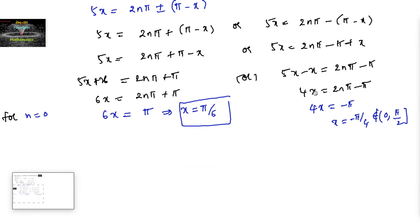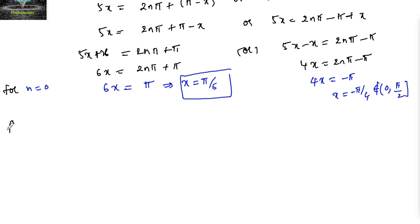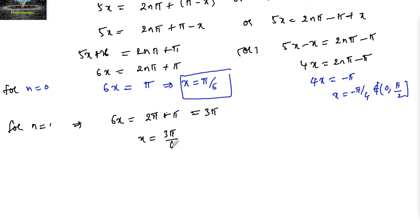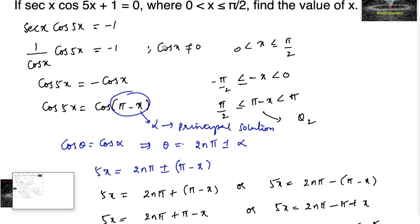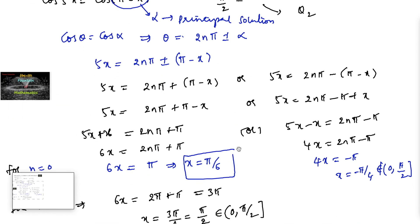For n = 1 in the first case: 6x = 2π + π = 3π, so x = 3π/6 = π/2. Although π/2 belongs to (0, π/2], for x = π/2 the original equation is not satisfied because cos x cannot equal 0, and cos(π/2) = 0. So we should not consider x = π/2.